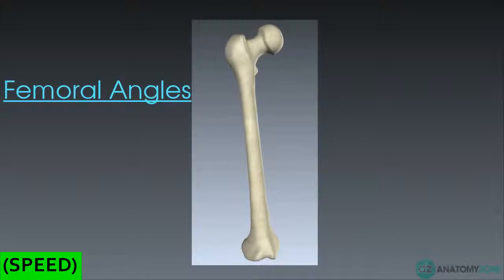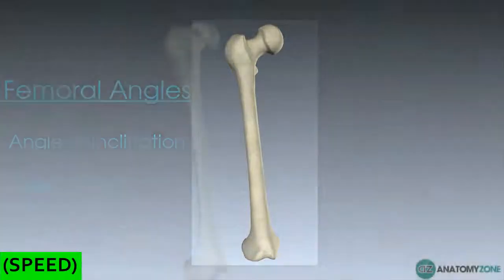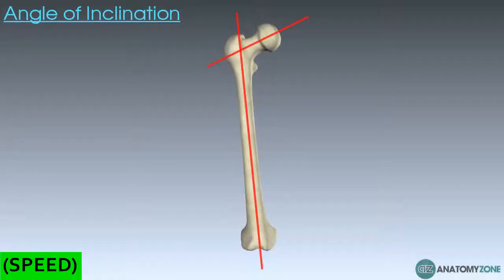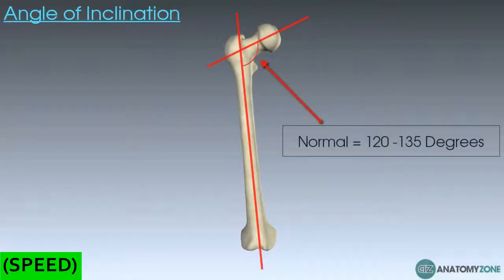The final things to cover are two angles the femur naturally has: the angle of inclination and the torsion angle. The femoral angle of inclination is the angle formed between a line going down the shaft of the femur and a line going through the neck of the femur. Typically in the normal adult this angle is between 120 and 135 degrees, though different texts state slightly different figures — the average is reported to be around 130 degrees.